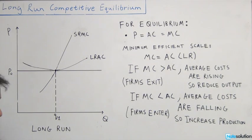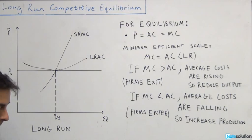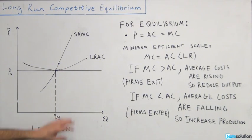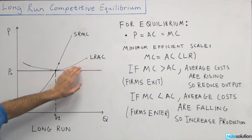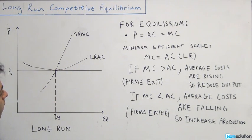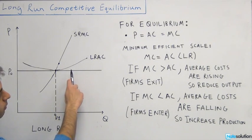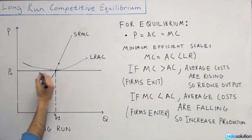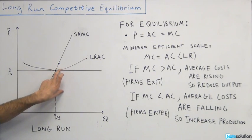The first option says marginal cost exceeds average total cost. A situation where marginal cost would exceed average total cost would be somewhere over here. This means that the cost of producing that last unit is greater than the cost of producing all the units on average, so your average costs are in fact increasing or rising. The price is given as a horizontal line, so this is saying that your marginal cost as well as your average cost is greater than price at this particular point.